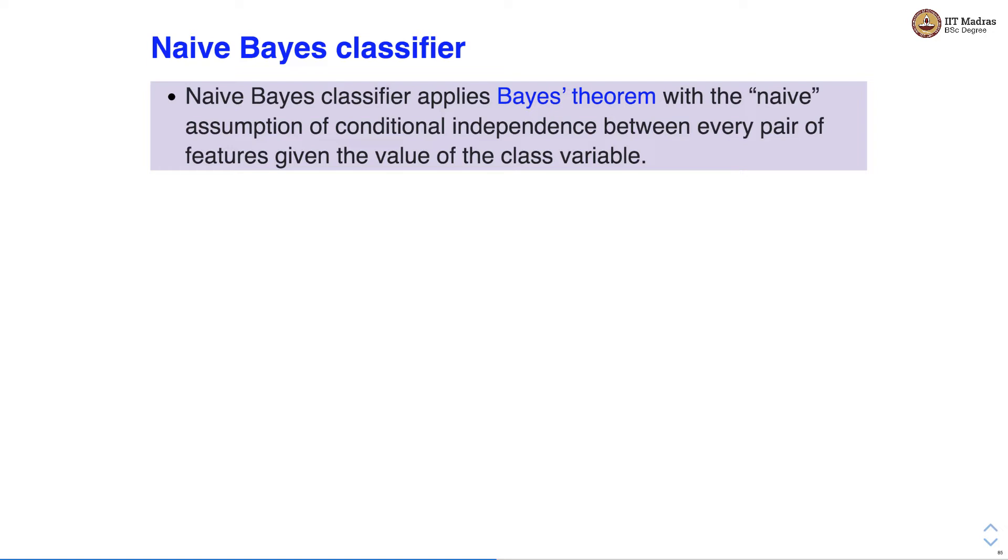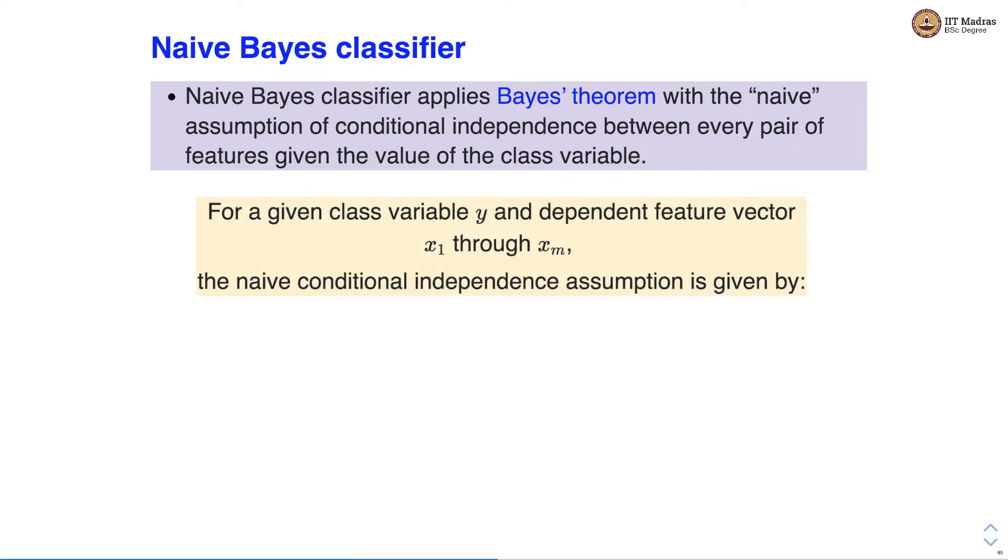We know that Naive Bayes classifier uses Bayes theorem for predicting the probability of a sample belonging to a specific class. It makes use of a conditional independence assumption among the features.